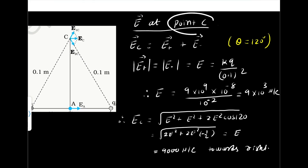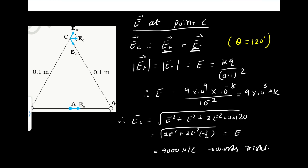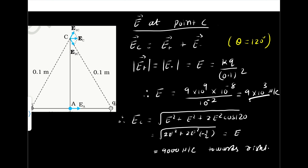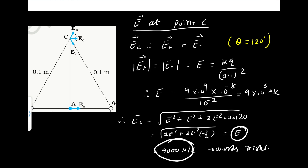The electric field at point C is the vector sum of E₊ and E₋. Since both have the same magnitude, E = KQ/(0.1)² = (9×10⁹ × 10⁻⁸) / 10⁻² = 9000 N/C. Since the two vectors are equal in magnitude and the angle between them is 120°, the resultant is also E = 9000 N/C, acting towards the right.